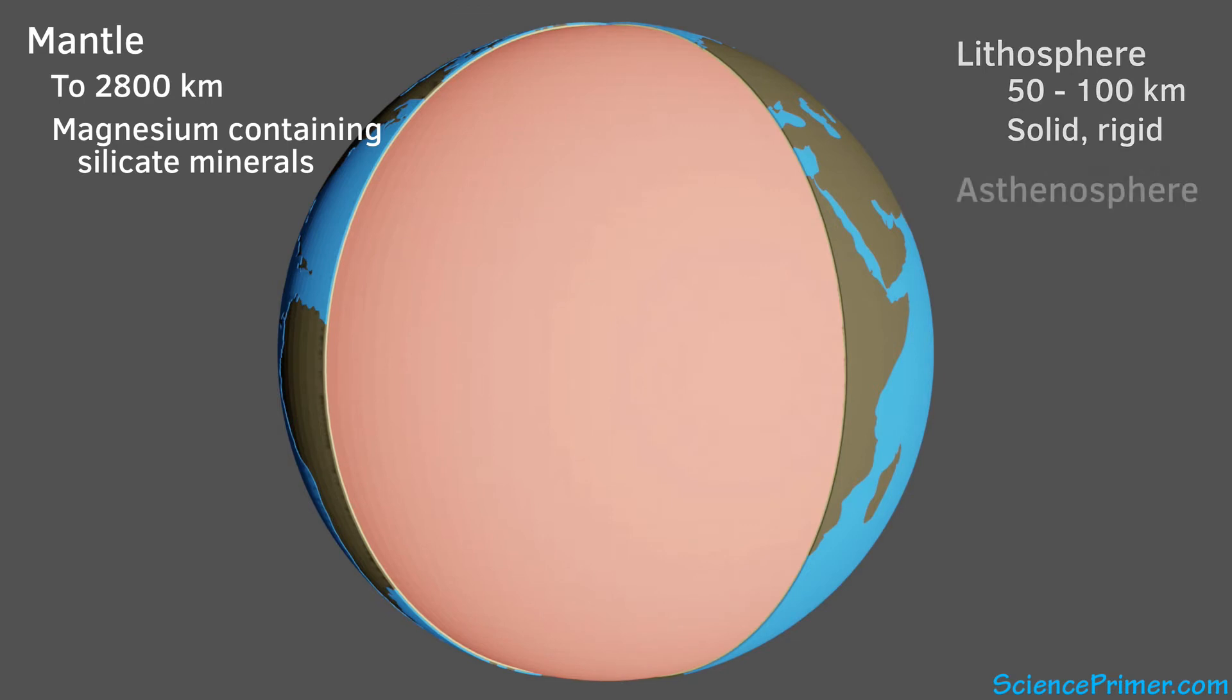The next layer of the mantle is the asthenosphere, which extends down about another 100 kilometers. At this depth, the combination of temperature and pressure allows some of the mantle material to melt, giving the asthenosphere a viscous, fluid-like consistency. This fluid-like layer is what drives tectonic activity as the rigid lithosphere above is able to slide over it.